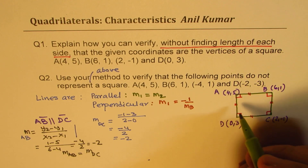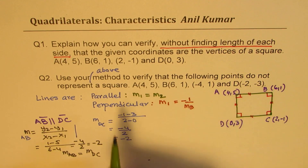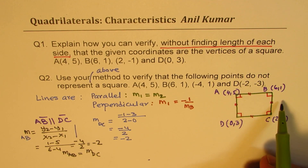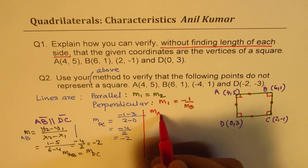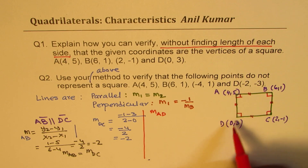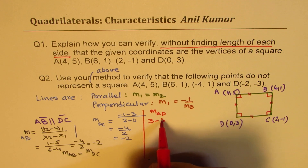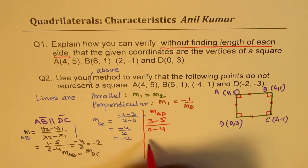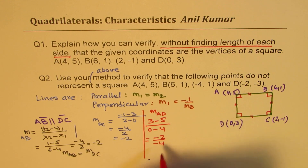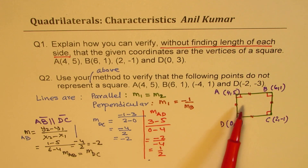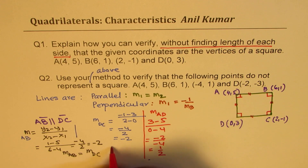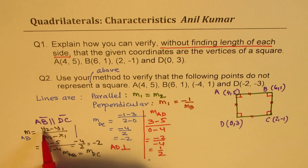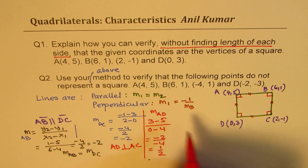Now let us check that AD is perpendicular to AB. Slope of AD = (3-5)/(0-4) = -2/-4 = 1/2. Do you see that 1/2 is the negative reciprocal of -2? So AD is perpendicular to both AB and DC, since those two are parallel.